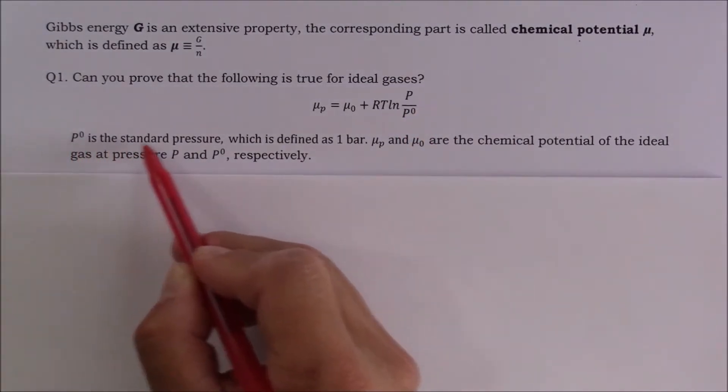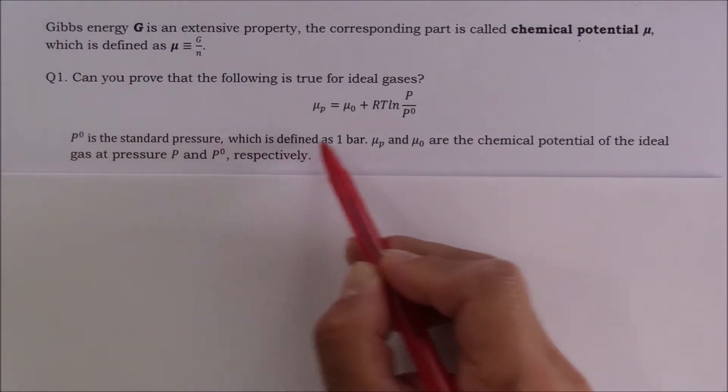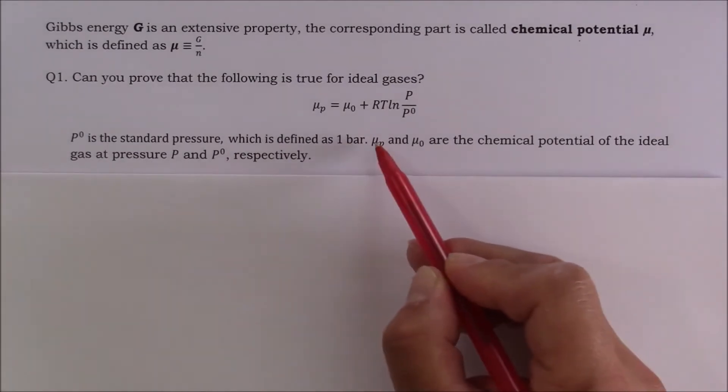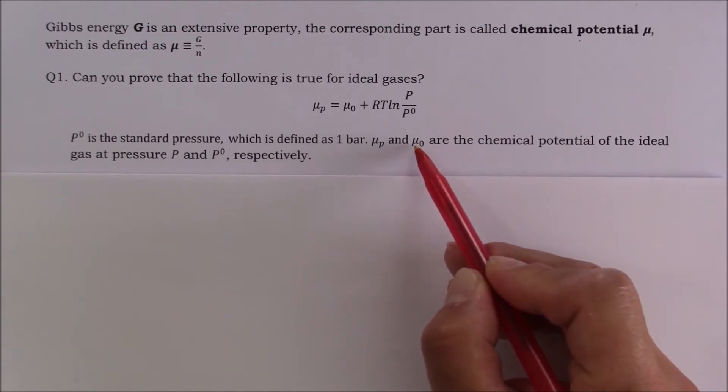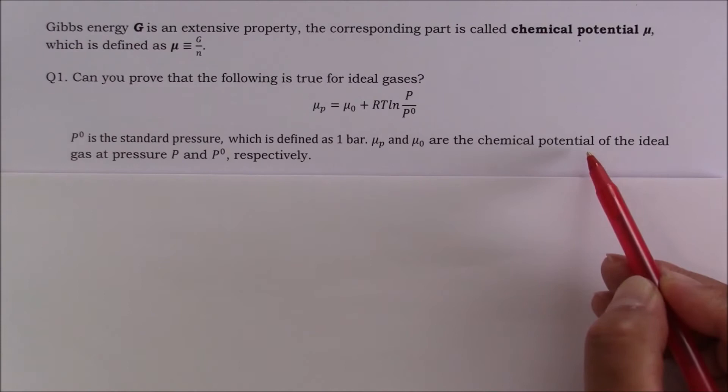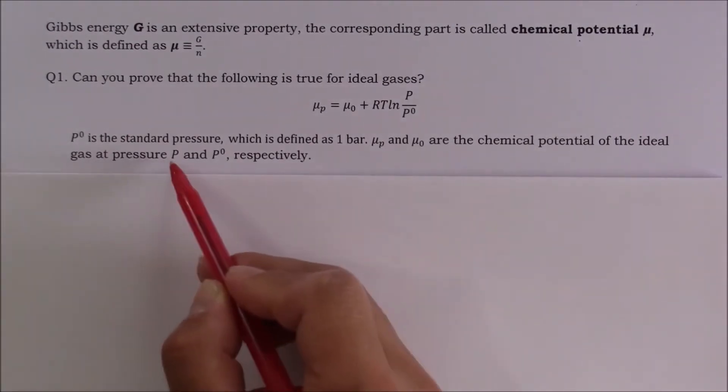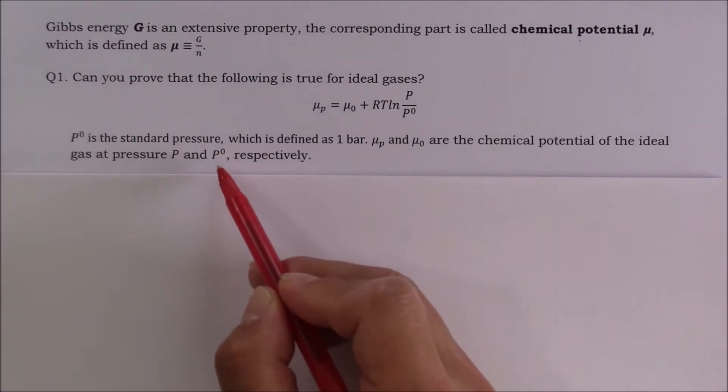P0 is the standard pressure which is defined as one bar. The chemical potential at P, or μ_P, and the chemical potential at P0, or μ_0, are the chemical potentials of the ideal gas at pressure P and P0 respectively.